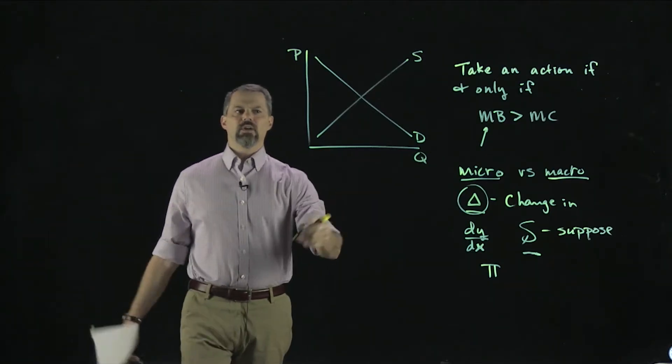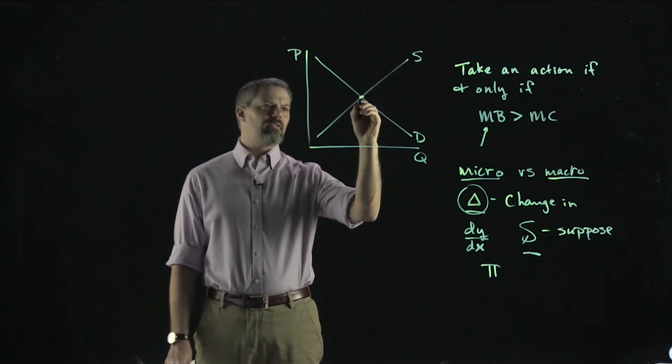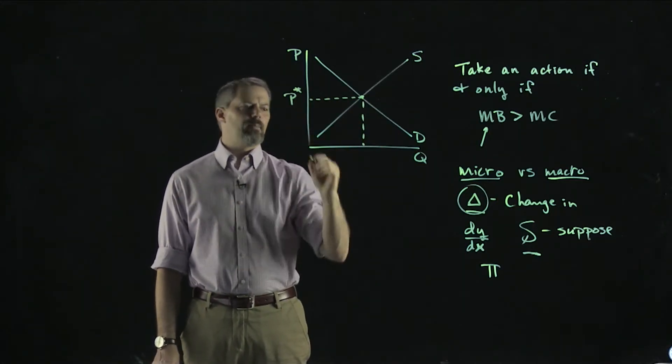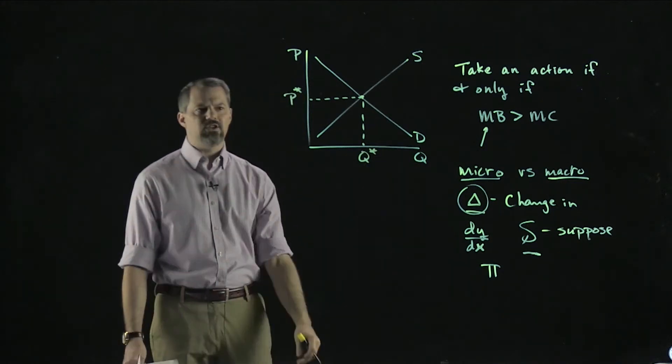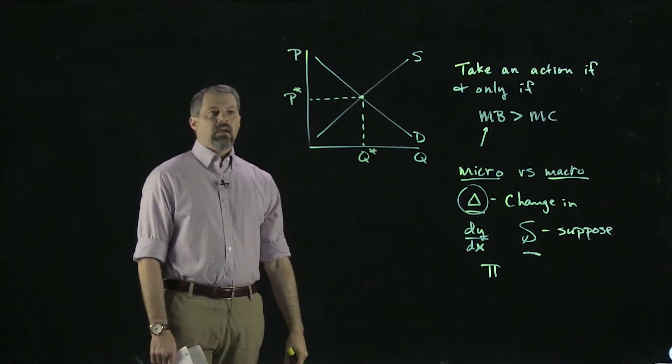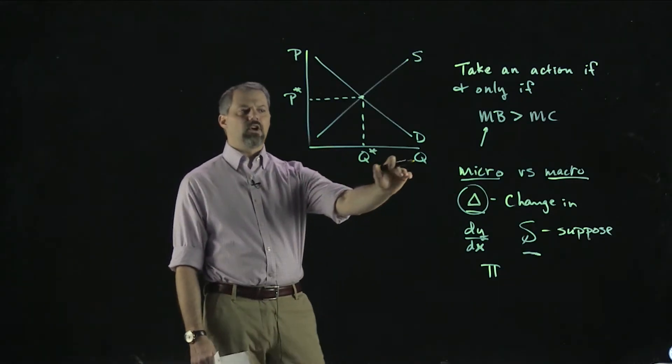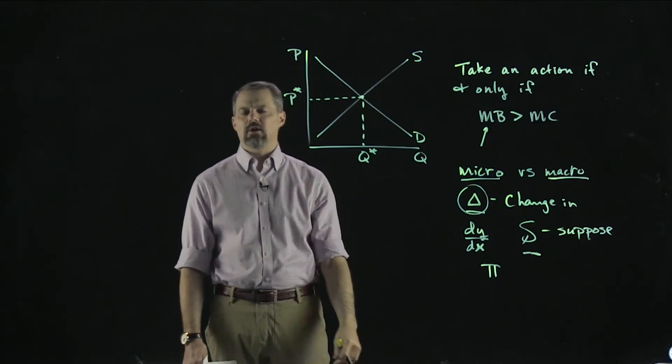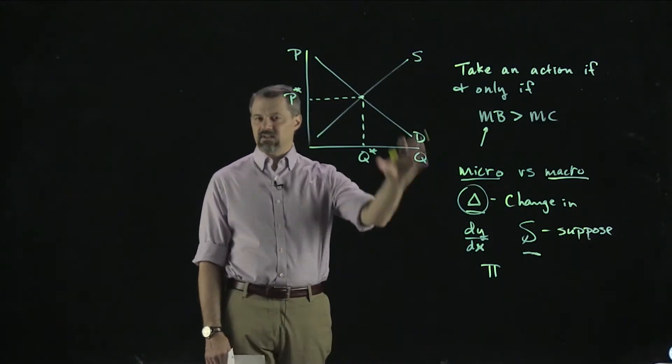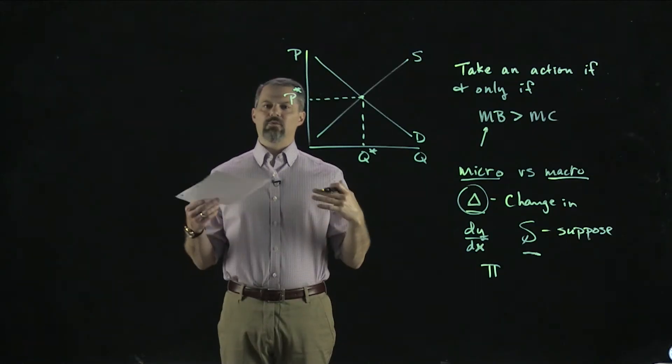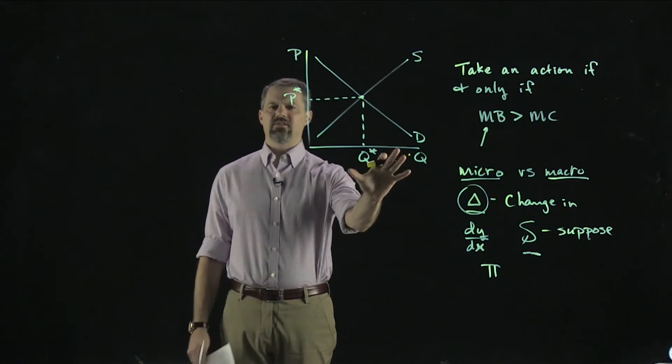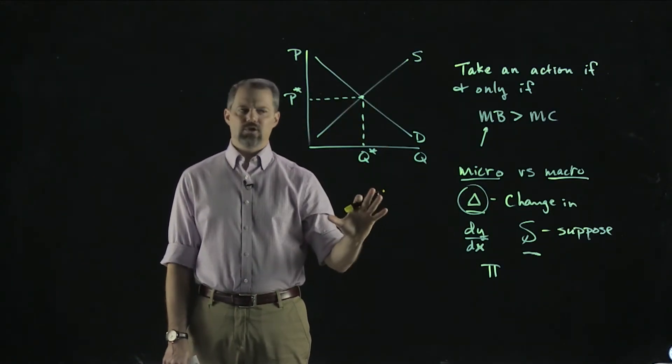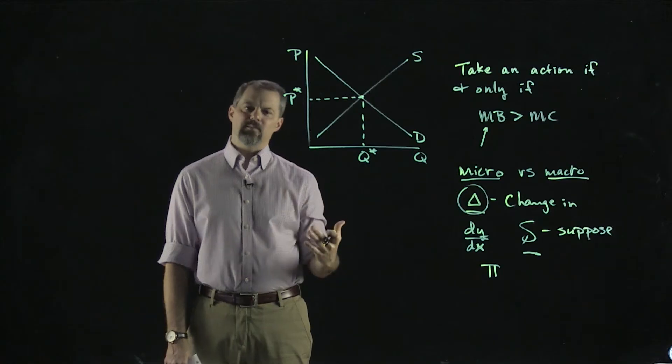We typically have price on the vertical axis and quantity on the horizontal axis. What we know is that if we look at the intersection of the demand curve and the supply curve, that gives us the equilibrium price, which I'm going to call P*, and the equilibrium quantity Q*. In a principles class, you would have talked about the determinants of demand, the things that shift demand curves, and the determinants of supply.